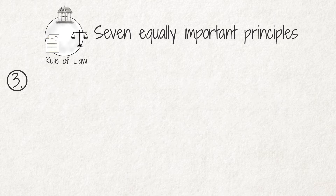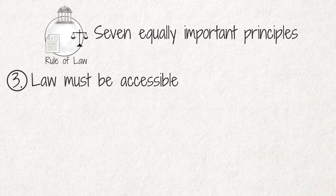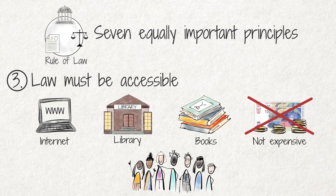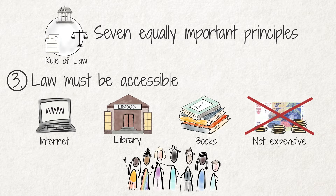Principle 3 is that the law must be accessible to everyone. It should not be difficult or expensive for ordinary people to find out what the law says.